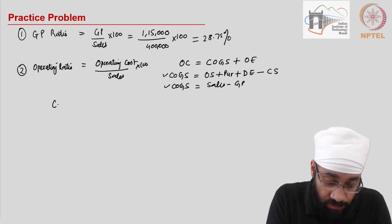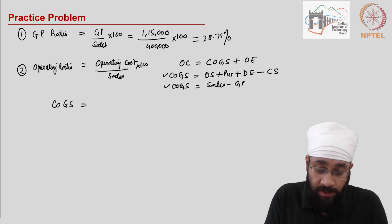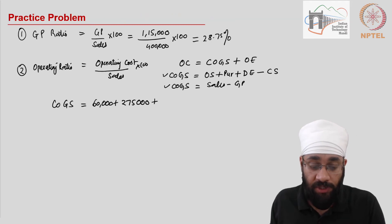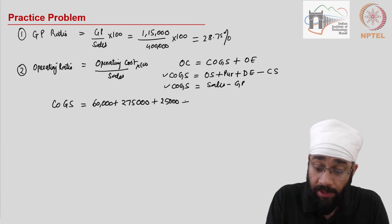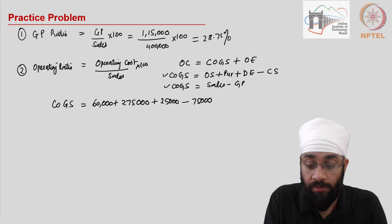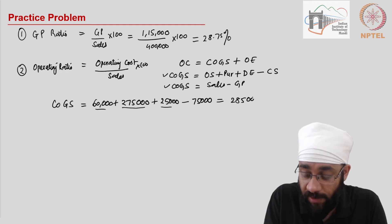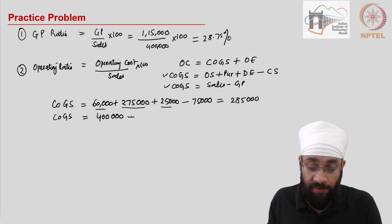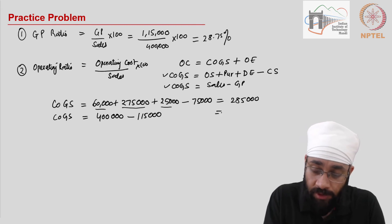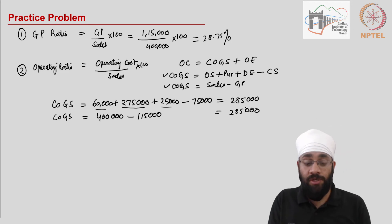So let's just figure out cost of goods sold. Cost of goods sold is equal to opening stock which is 60,000 plus the purchases, 275,000 plus direct expenses which are wages, 25,000 minus the closing stock which is 75,000. This gives you 285,000. And if you want to use the other way, then you have sales which is 400,000 minus the gross profit, 115,000. So this gives you again 285,000 as the cost of the goods which are sold during the year.